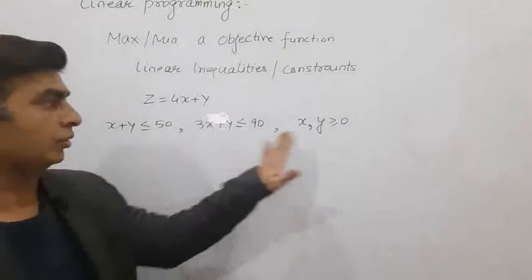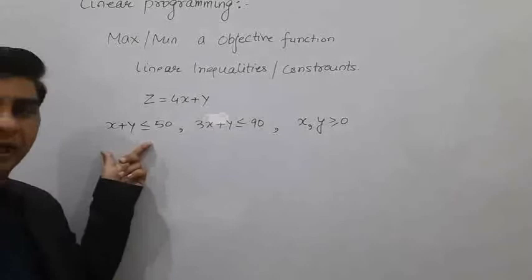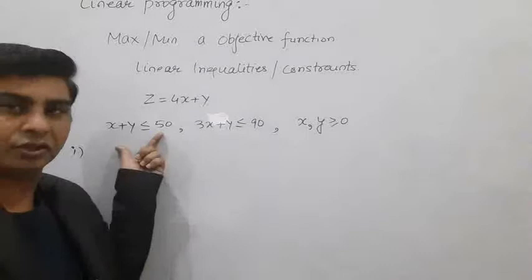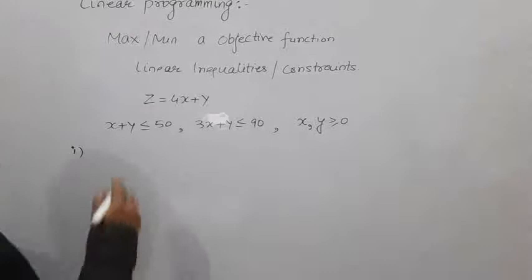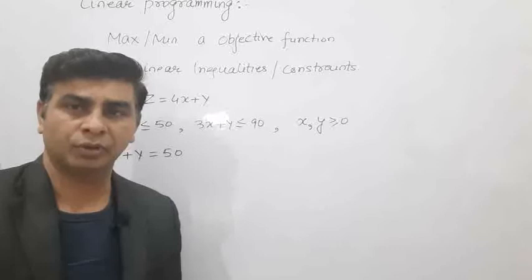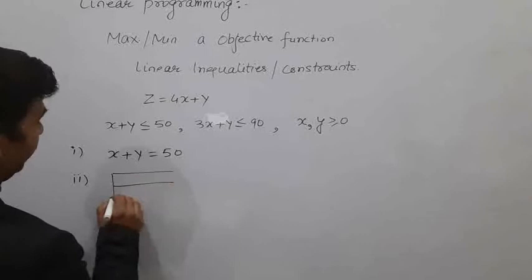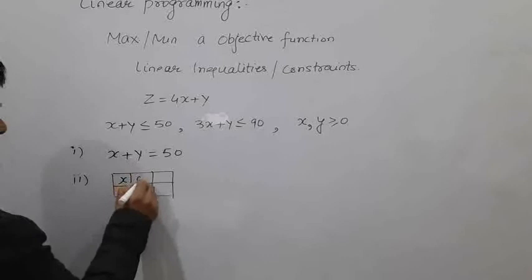To draw these linear inequalities on the graph paper, we use three steps. Step one: replace the inequality symbol by an equality symbol so we can find points and plot a line. Step two: draw a table to find the points. For x + y = 50, put x = 0 then y = 50; put y = 0 then x = 50.